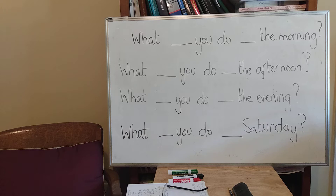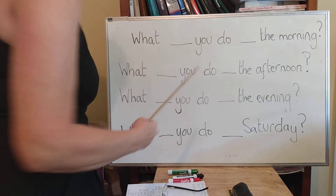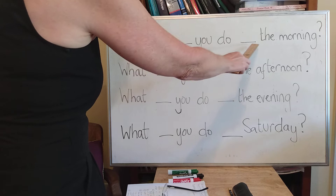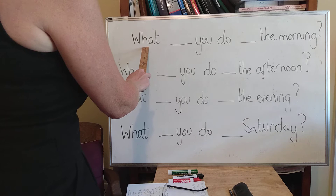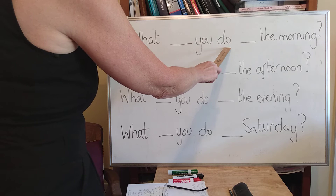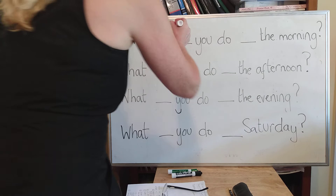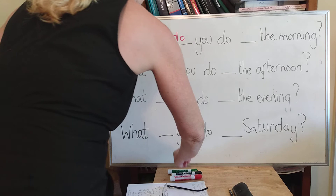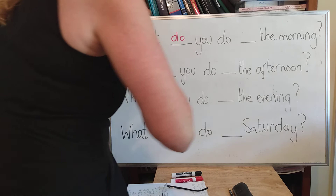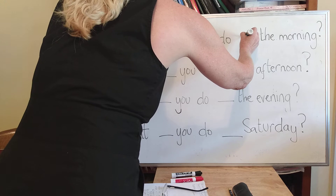So here is our verb — that is our doing word. Let's think: what are the missing words here? 'What you do the morning.' It's a question, it uses a question word. What do you do in the morning? Can you remember what the missing word is? You can shout it out. What do you do in the morning.